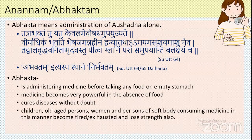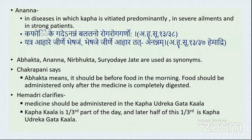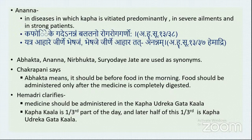This time of administration is based on the strength of the patient — only if the patient has sufficient strength is this kala applicable. Mainly, Ananna kala is given when Kapha dosha is vitiated predominantly. The synonyms are: Abhakta, Ananna, Marbukta, Suryodaya, and Chadhi — as given in Sharangadhara Samhita.